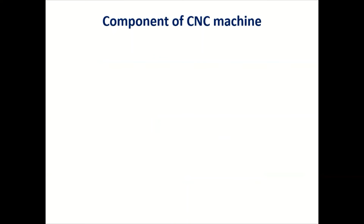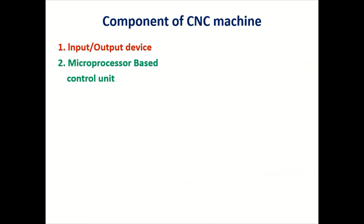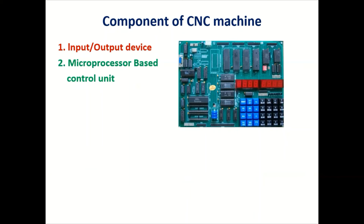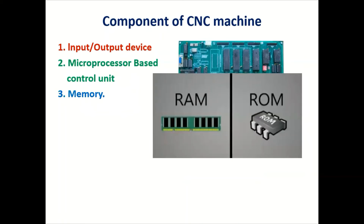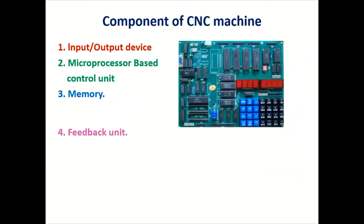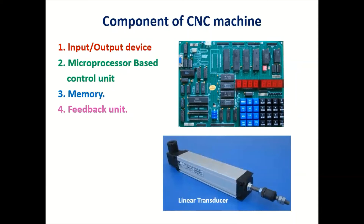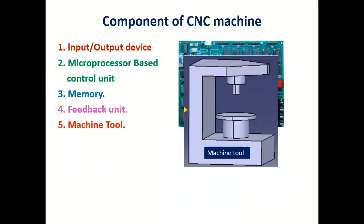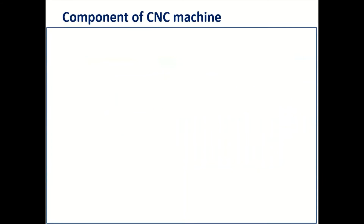Now the components of the CNC machine. The first component is the input/output device. Second is the microprocessor-based control unit, which is mostly used in the machines. Then the memory — two memories are used: RAM and ROM. Then the feedback units, for which you can use a linear transducer or encoders. Then the machine tool. These are the interface components of the CNC machine.